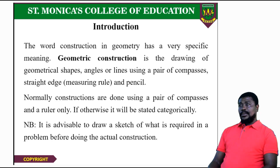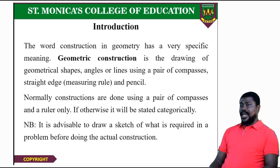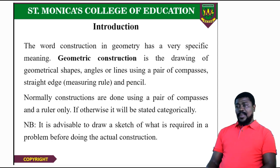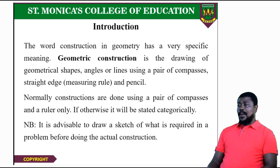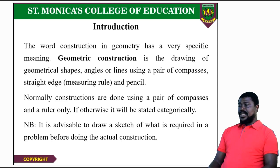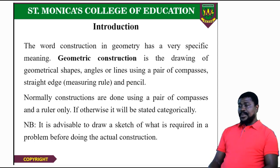The word construction in geometry has a very specific meaning. Geometric construction is a drawing of geometrical shapes, angles or lines using a pair of compasses, straight edge or a measuring rule and a pencil. Normally constructions are done using a pair of compasses and a ruler only. If otherwise, it will be stated categorically. It is advisable that we sketch all our problems before we start with the actual construction.